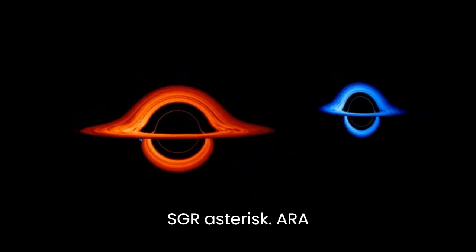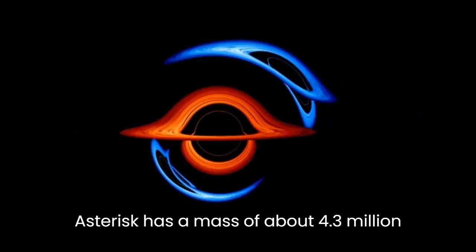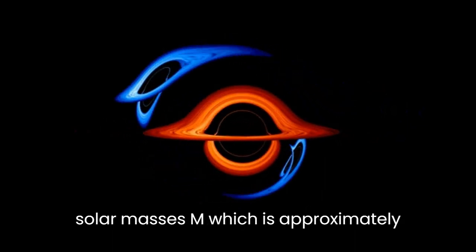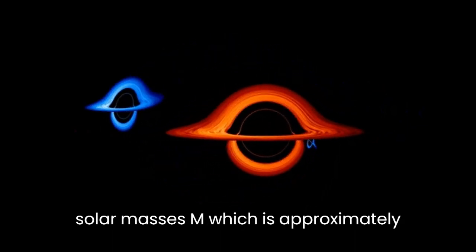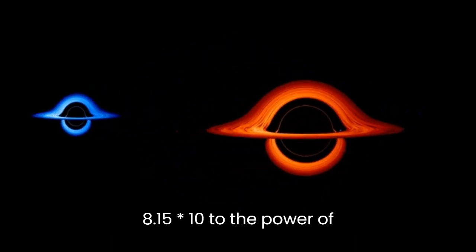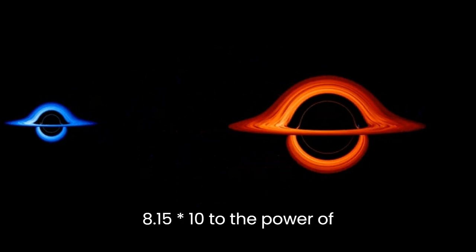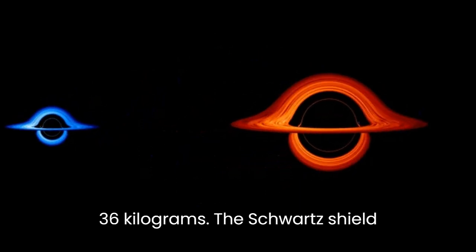Sgr A* has a mass of about 4.3 million solar masses, which is approximately 8.15 × 10^36 kilograms.